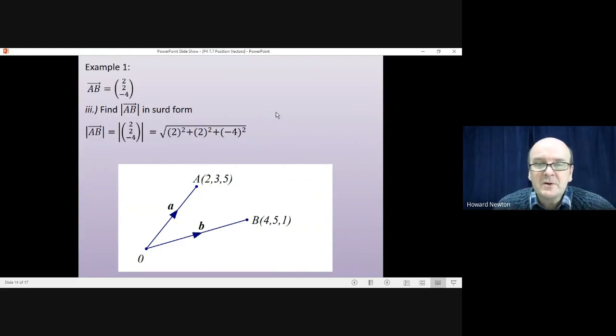Which using Pythagoras is the square root of 2 squared plus 2 squared plus minus 4 squared. Which is root 24, which you could simplify to 2 root 6. And that's what they want. That would be writing the answer in surd form. They don't want it as a rounded decimal.